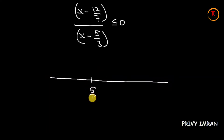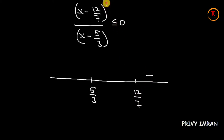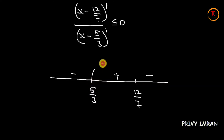On the number line, let me consider the critical points in ascending order: 5/3 and 12/7. Since the expression is less than or equal to 0, I start with a negative sign at 12/7. The power is 1, which is an odd number, so the sign changes at each critical point. Similarly at 5/3, the sign changes again.